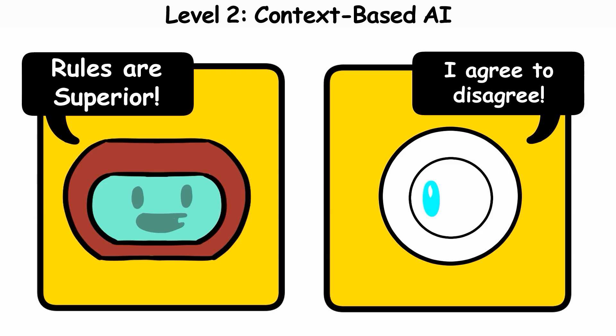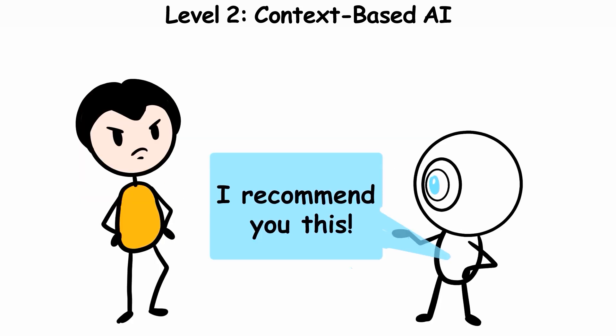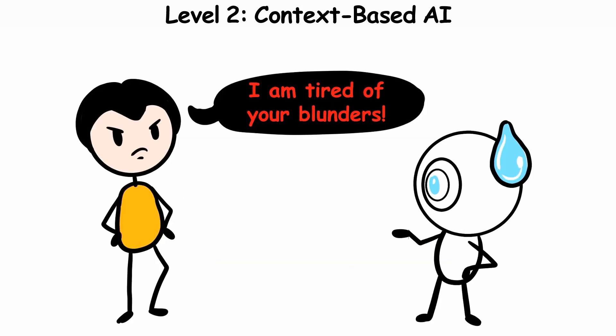Unlike Rule-Based Systems, these AIs don't need instructions for every scenario. They read the room and adjust. Still, they're missing something big. They track patterns, but can't grasp meaning or learn from their blunders.